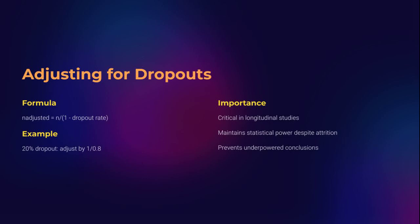In longitudinal studies, people leave — they relocate, lose interest, or fall sick. That's attrition, and ignoring it means setting yourself up for underpowered results. Fortunately, the fix is simple: adjusted N equals N divided by (1 minus dropout rate). Expecting a 20% dropout? Divide your initial sample by 0.8. This buffer ensures that even after losing participants, your study retains enough power. This is critical in trials, follow-ups, and behavioral studies where long-term engagement is tricky. Planning for dropouts is not pessimism — it's professionalism.